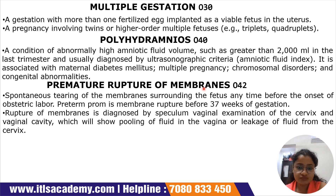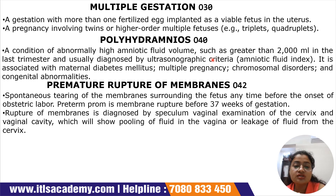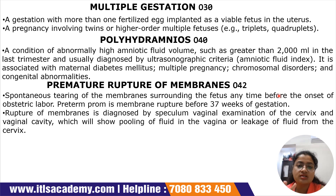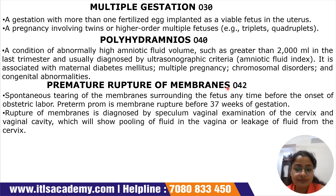Next is polyhydramnios, corresponding to subcode O40. It is a condition of abnormally high amniotic fluid volume — more than 2000 ml in the last trimester — and is usually diagnosed by ultrasound (USG) using the amniotic fluid index. It is associated with maternal diabetes mellitus, multiple pregnancy, chromosomal disorders, and congenital abnormalities.